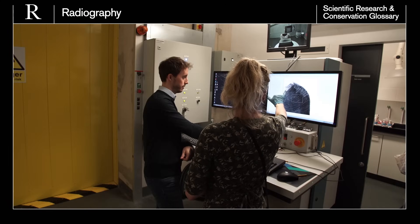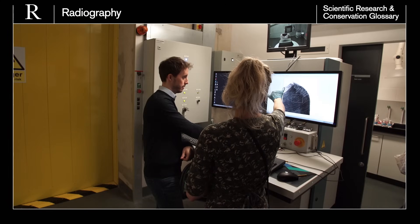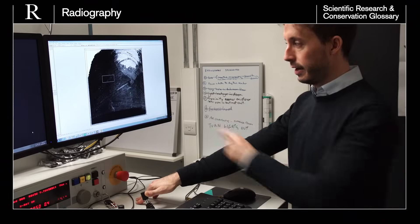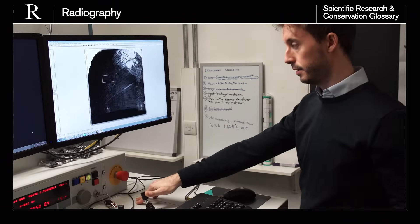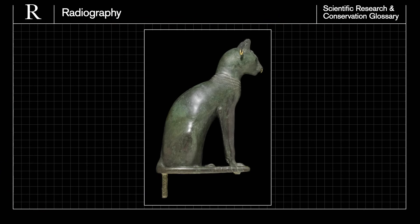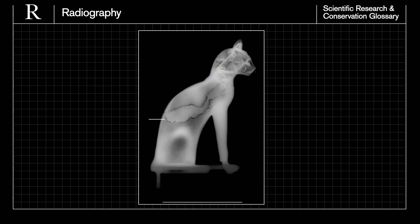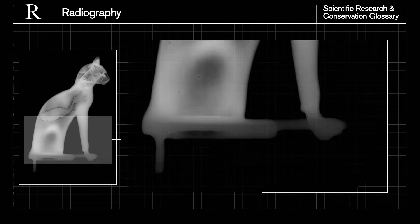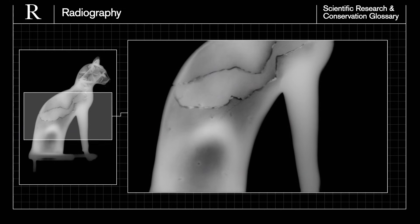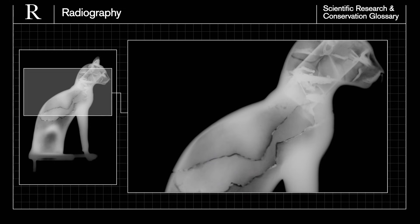Radiography uses X-rays, a special type of invisible light which can pass all the way through objects. By using X-rays we can look inside valuable and delicate objects without opening or damaging them, so we can answer questions about their condition, how they were made, or if anything is hidden inside.